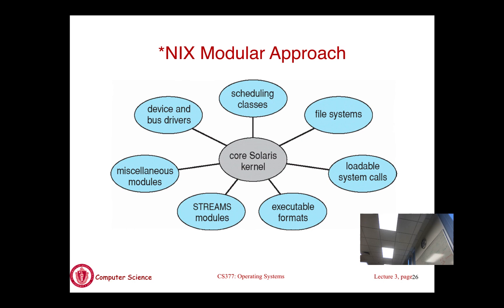From a security standpoint, a modular OS is as vulnerable as a monolithic kernel: if you exploit a vulnerability in one module, you get access to the entire kernel's address space. So there are no better security benefits than with a monolithic architecture, though you do get the software engineering and efficiency advantages.